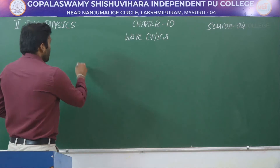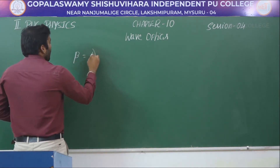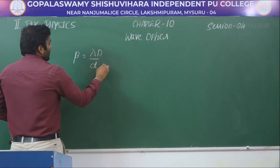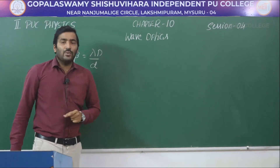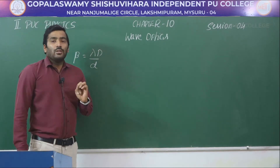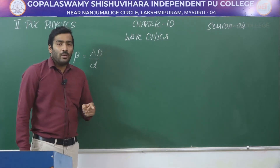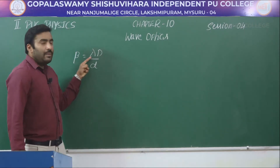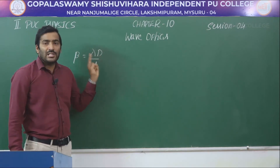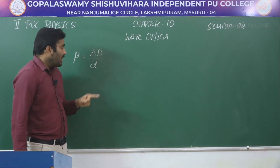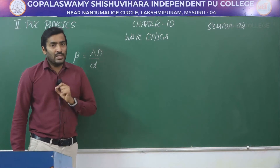The expression looks like this: beta is equal to lambda times D divided by d, where beta is known as fringe width, which is the distance between two consecutive dark or bright fringes. Lambda is the wavelength, capital D is the distance between the slit and the screen, and small d is the distance between the two slits.